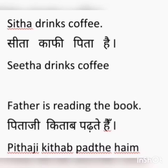Next example: Father is reading the book. The verb 'reading' is giving the answer of 'what'. Reading what? The book. When the verb is giving the answer of 'what', we never use 'Ko' after the object. Book means 'Kitab' in Hindi, so we do not use 'Ko' after the book; we simply use 'Kitab'.